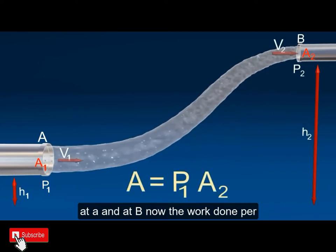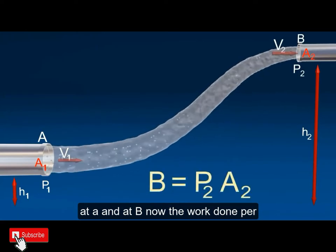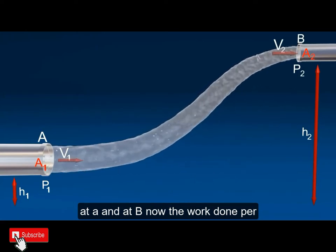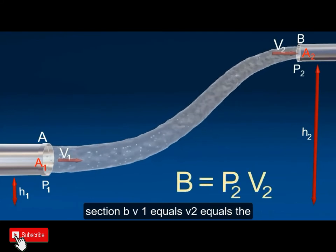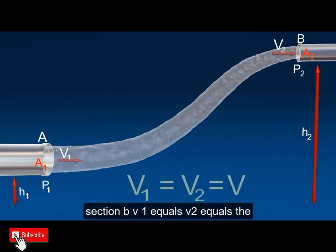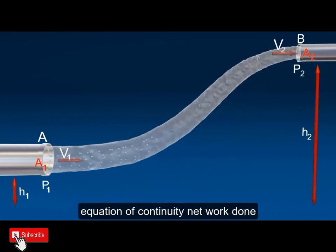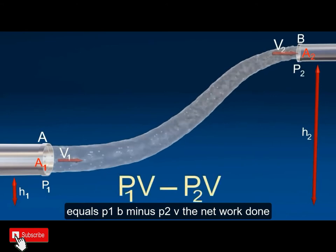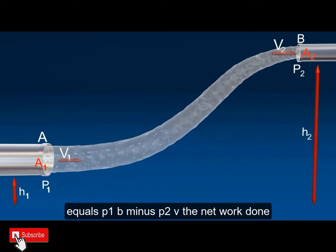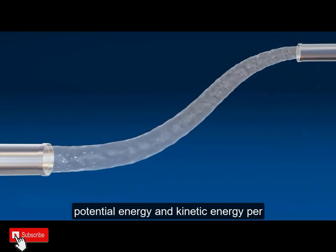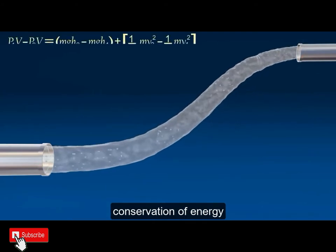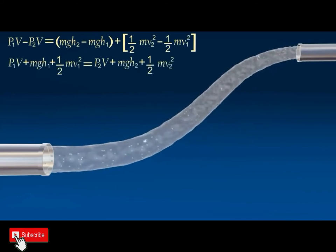The force on the liquid at A and at B. Now, the work done per second on the liquid at section A and at section B, where V₁ equals V₂ equals V by equation of continuity. Network done equals P₁V minus P₂V. The net work done per second equals the increase in potential energy and kinetic energy per second from A to B, according to law of conservation of energy.